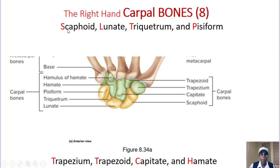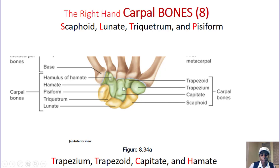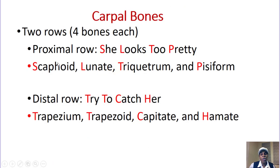The eight carpal bones: scaphoid (boat-like), lunate (luna, moon-shaped), triquetrum (three sides, like a triangle), pisiform (P-shaped). Trapezium and trapezoid sound similar because it's the same shape, just named differently in American and British English — many angles. Capitate means big head. Hamate is hook-like. The acronym is: 'She looks too pretty, try to catch her' — scaphoid, lunate, triquetrum, pisiform, trapezium, trapezoid, capitate, hamate.